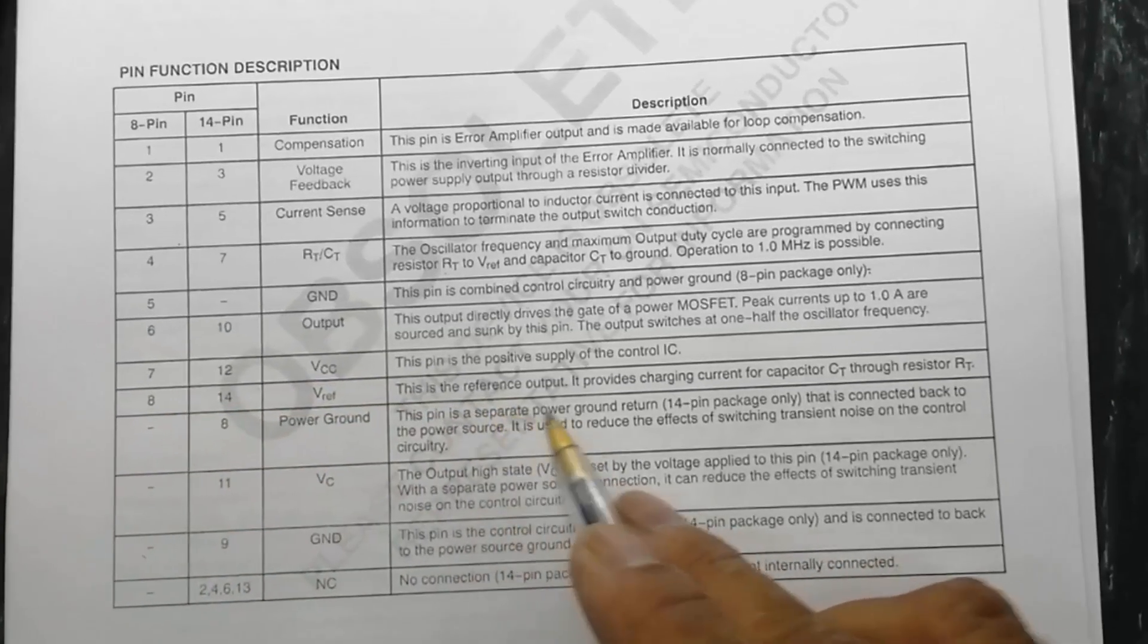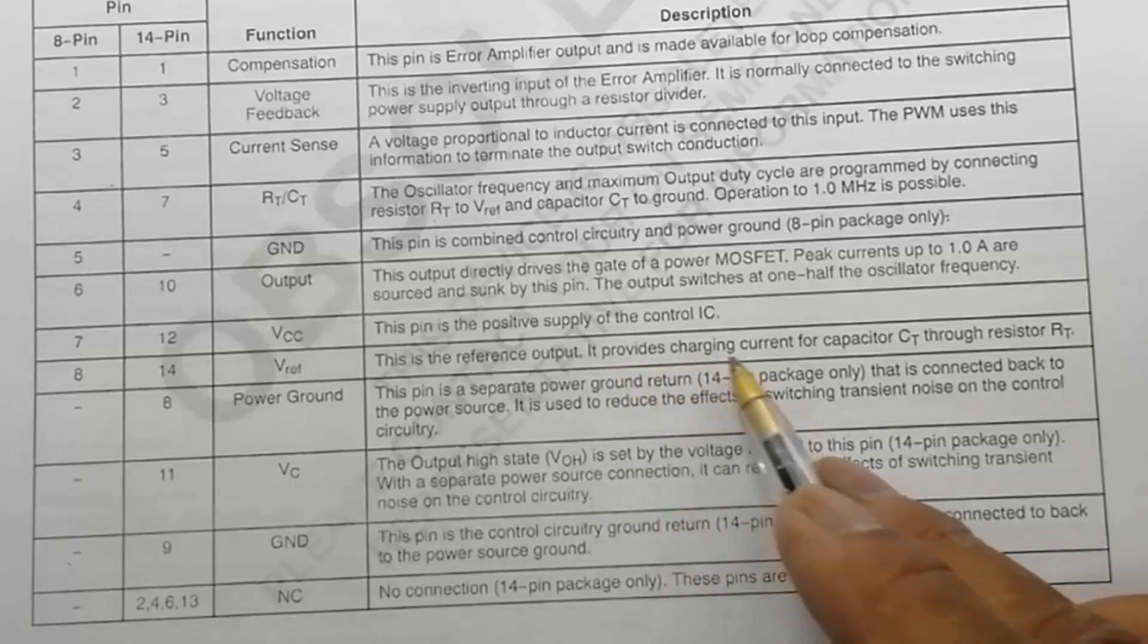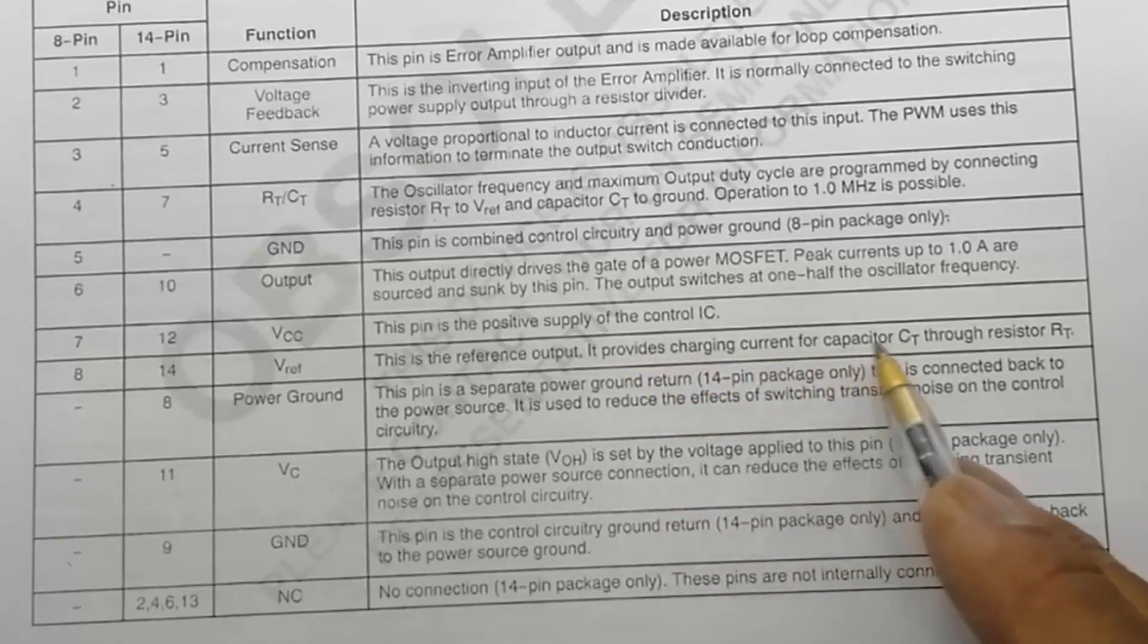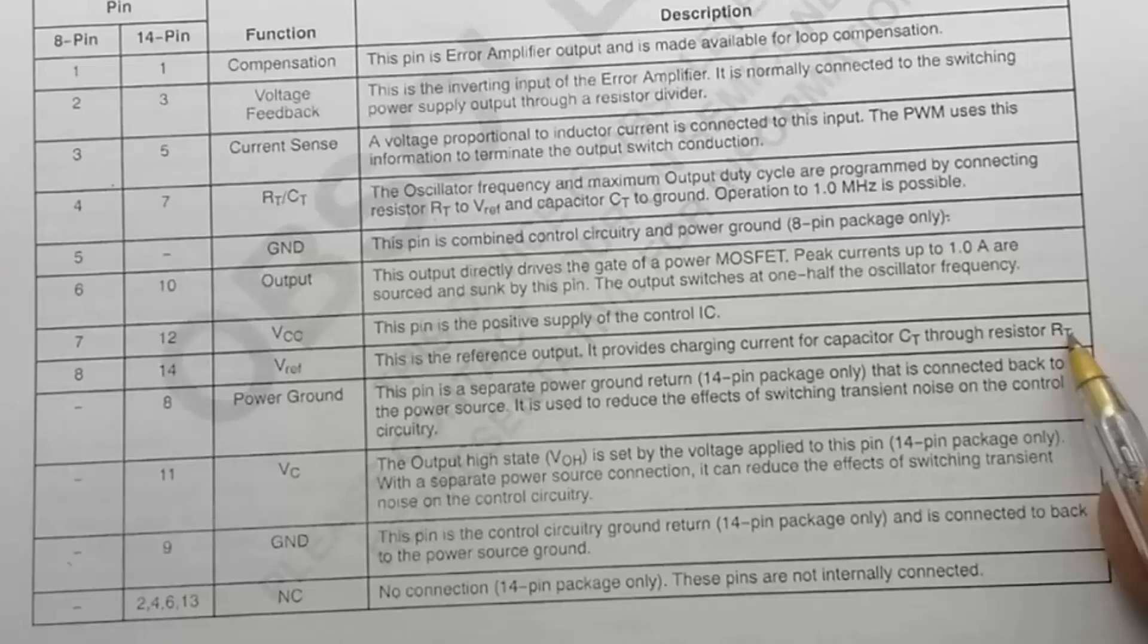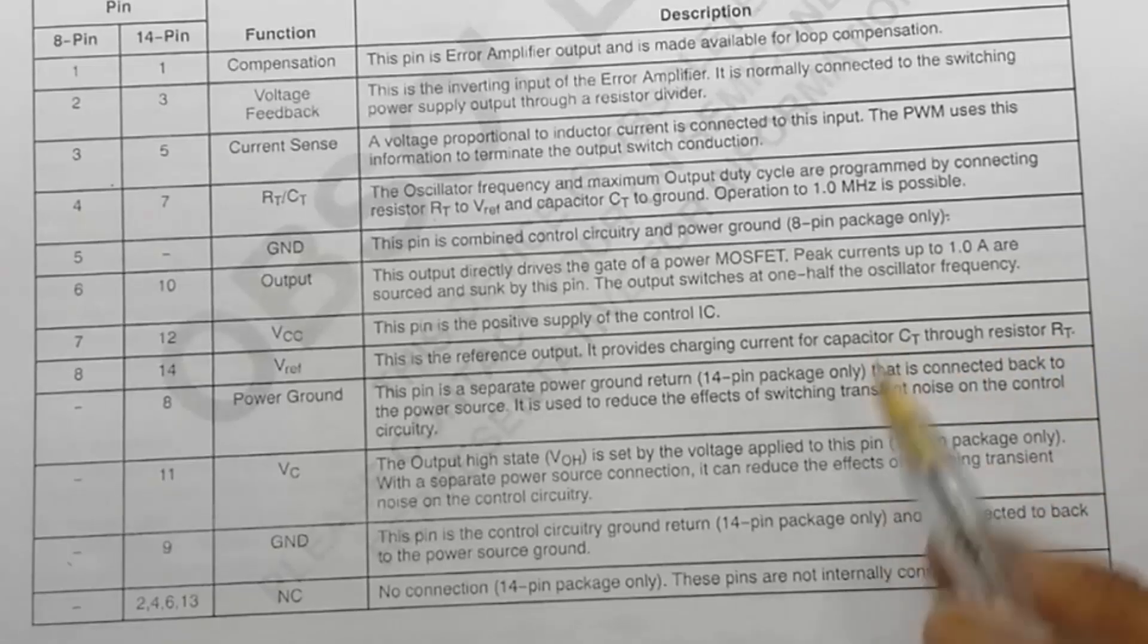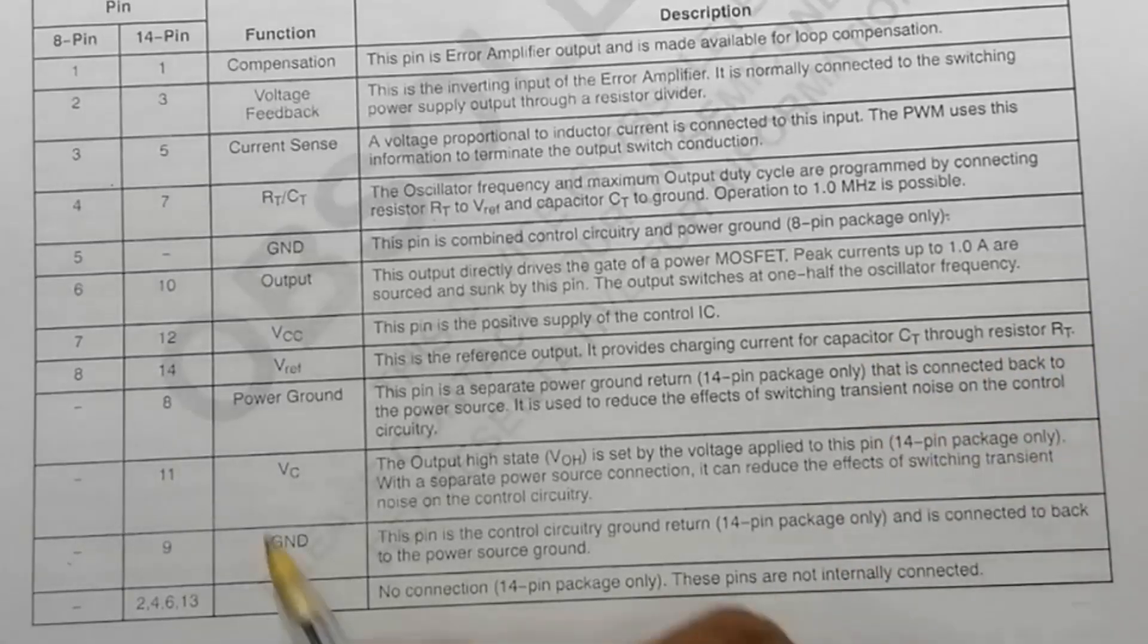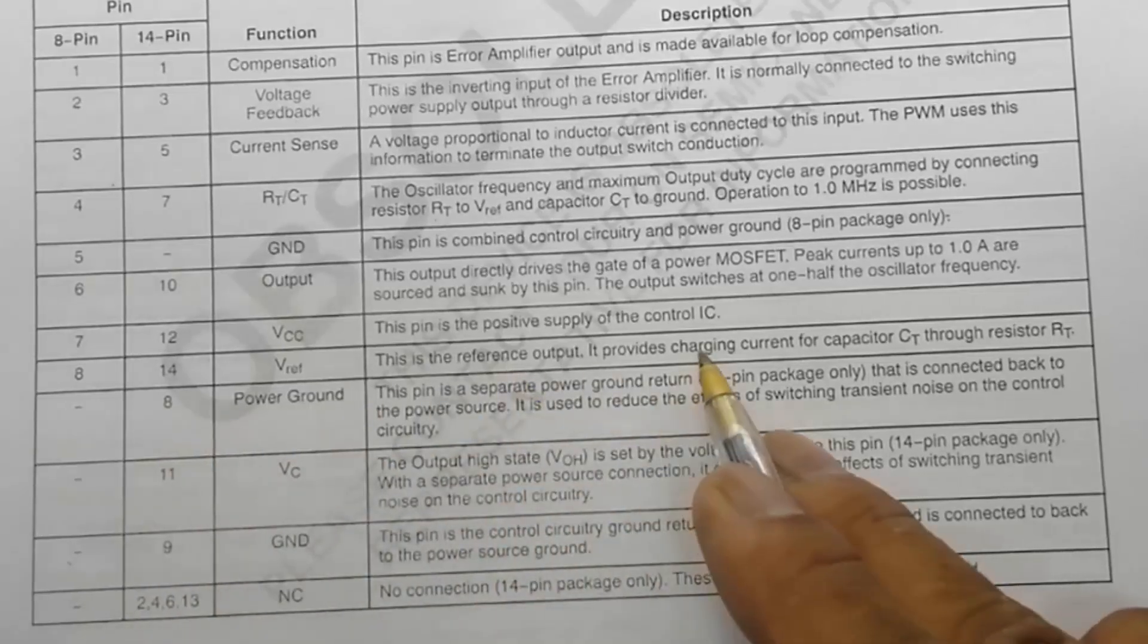V reference: this is reference output from the IC. It provides charging current of CT and RT. Why? It is used to give a fixed frequency. It is 5 volt output from the IC.